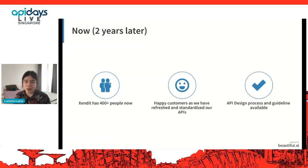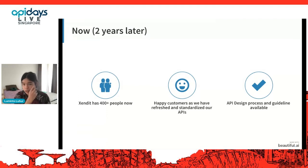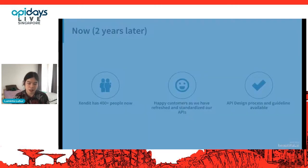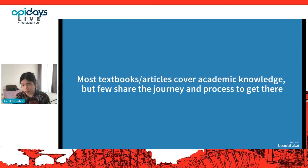Fast forward to now — we've grown five times, now at 400-plus people. We've managed to refresh and standardize most of our APIs since then. We also have an API design process and guideline available for teams to refer to. But the journey over the past two years is what I'd like to share, because most textbooks or articles share academic knowledge but few share the actual journey, pain points, and processes to get there.